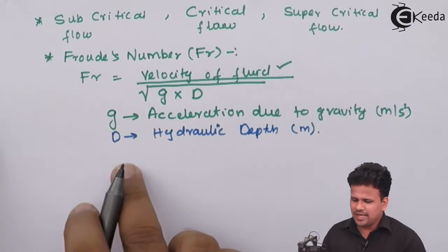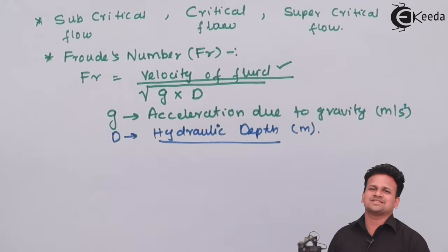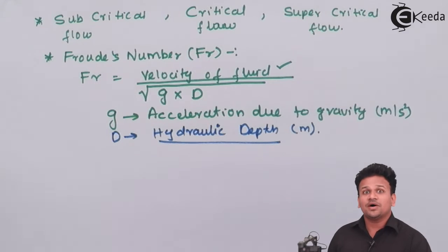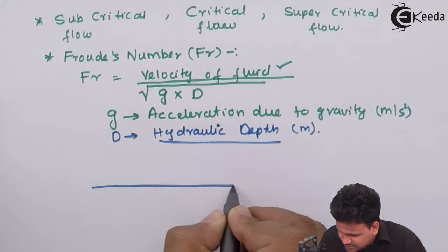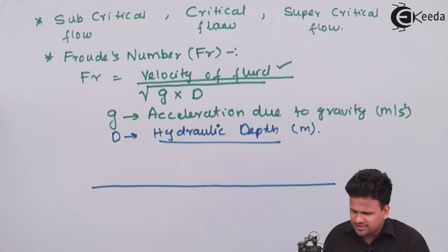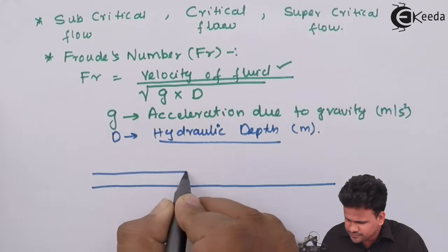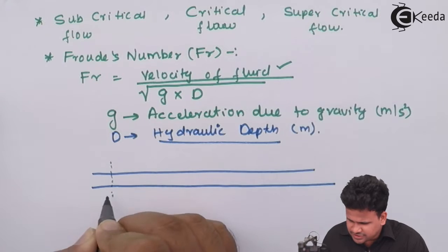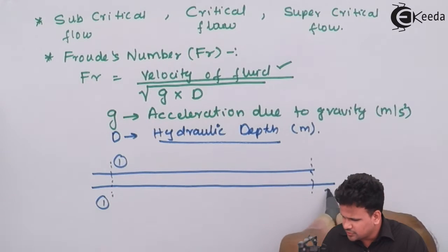Let us study what hydraulic depth actually means. Let us consider a fluid flowing on a horizontal surface — this is the horizontal surface. On this horizontal surface, the fluid is flowing from section 1-1 to section 2-2.